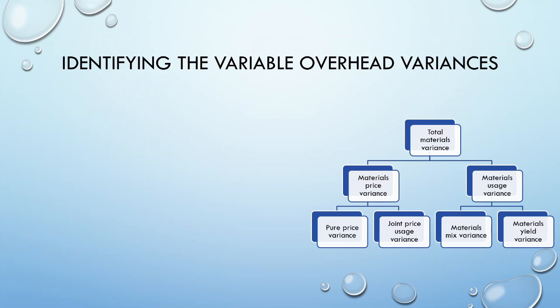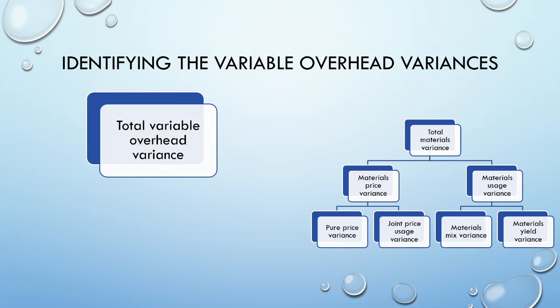Now let's consider the variable overhead variances we can get and how they compare to our material variances. On screen are the material variances we discussed in an earlier video. What variable overhead variances do we get? First, we get our total variable overhead variance, which is the difference between our flexed budget values and our actual variable overhead expense. This variance is based on the same principles as our total materials variance.